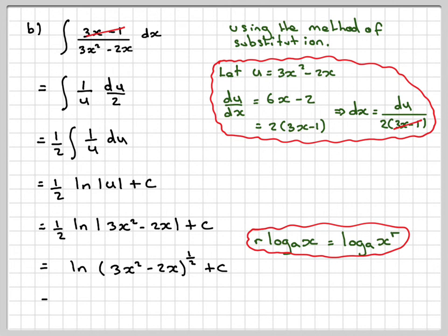And therefore write it as ln of the square root of 3x squared minus 2x plus c. That's if you're asked to write the final answer as a single logarithm.